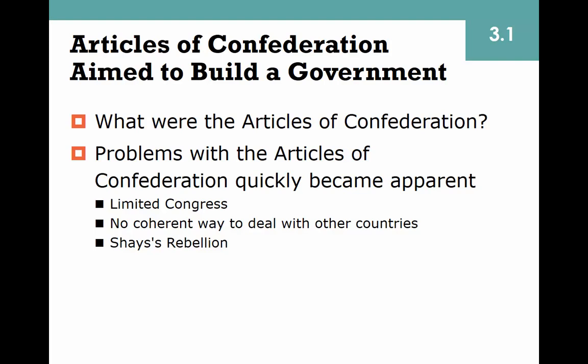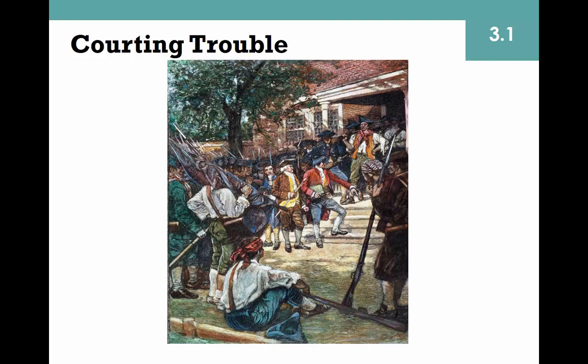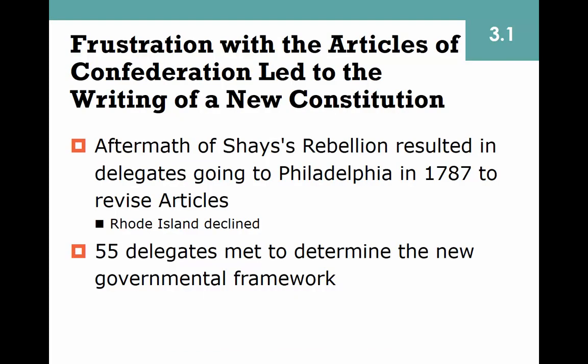These limits on Congress created many problems. There was no army, no ability to regulate trade, and no tax system to raise money. The government required voluntary cooperation from states, which did not happen fully. Without independent central power, confronting international issues was virtually impossible. Domestic concerns came to a head with Shays' Rebellion in 1786, when farmers in western Massachusetts protested state foreclosure of their property. The national government had no manpower or money to put down the rebellion.